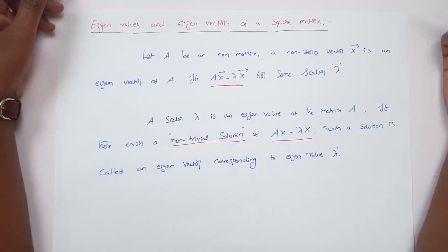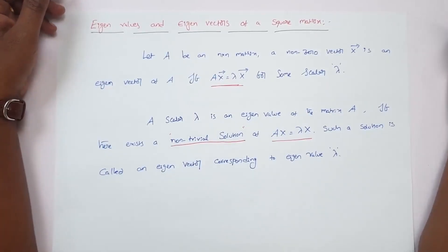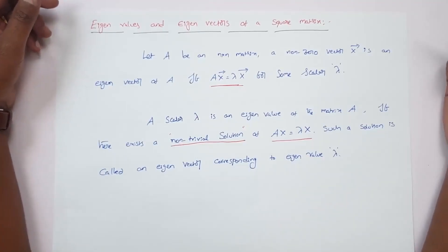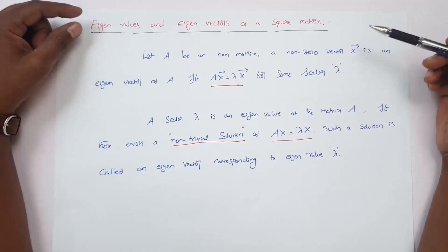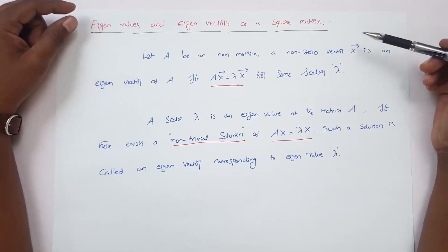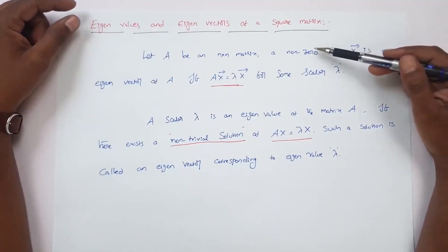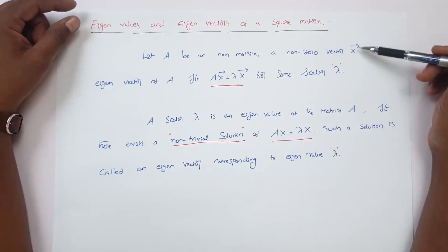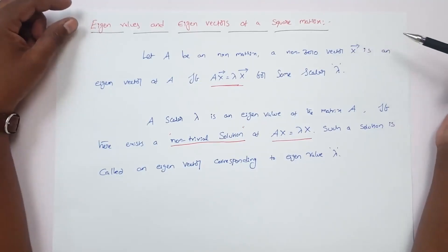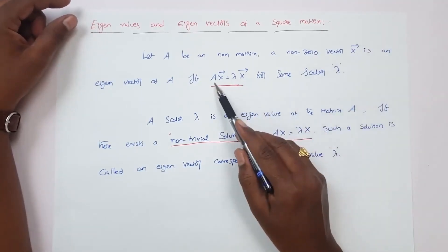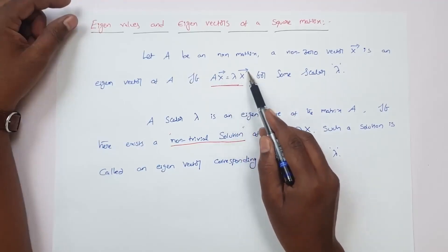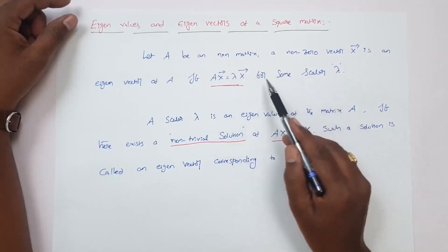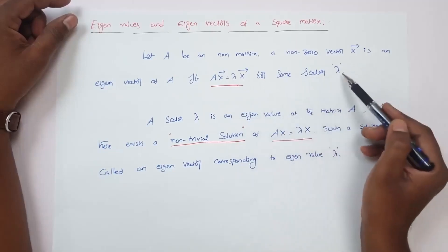We discuss eigenvalues and eigenvectors of a square matrix A. Eigen means characteristic. Let A be an n by n square matrix. A nonzero vector X is an eigenvector of A if A times X equals lambda times X, for some scalar lambda.